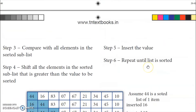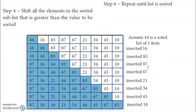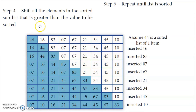Let's look at an example list. First, 44 is the first element, so it is assumed to be already sorted.